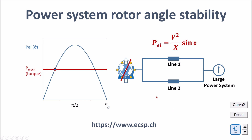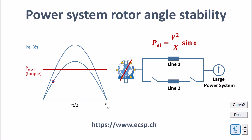Here is another example: a generator delivering power to the grid by means of two lines in parallel. The formula still applies as we have seen before. Due to a lightning strike, I will now lose one of the lines. With only one line, the power which can be delivered by the same generator is less than before. This x is now not the sum of two parallel lines but only one line, so it has nearly doubled. The total electric power which can be delivered is close to 50% of before, and therefore this power curve has jumped down.